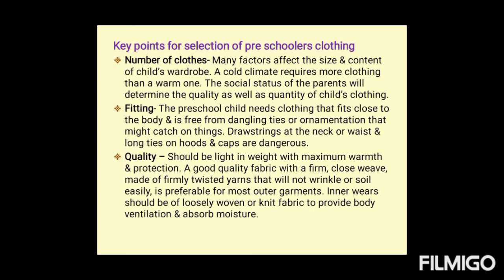Key points for selection of preschoolers' clothing: number of clothes — a cold climate requires more clothing than a warm one, and the social status of the parents determines the quality and quantity of the child's clothing. Fitting — the preschool child needs clothing that fits close to the body and is free from dangling ties or ornamentation. Drawstrings at the neck or waist and long ties on hoods and caps are dangerous. Quality — clothing should be light in weight with maximum warmth. A good quality fabric with a firm, close weave made of firmly twisted yarns that will not wrinkle or soil easily is preferable for outer garments. Inner wear should be of loosely woven or knit fabric to provide ventilation and absorb moisture.